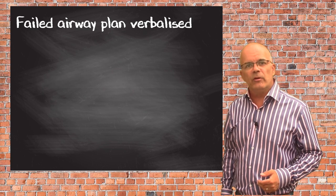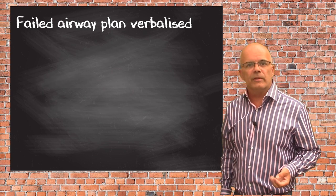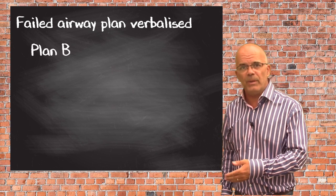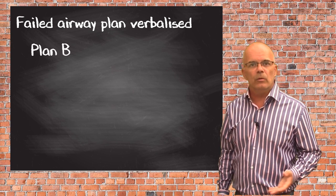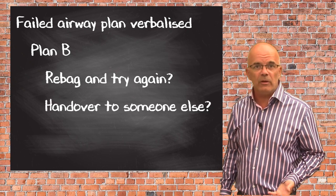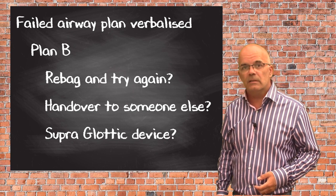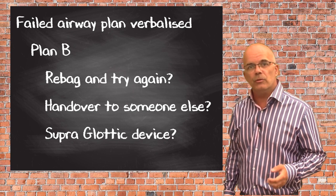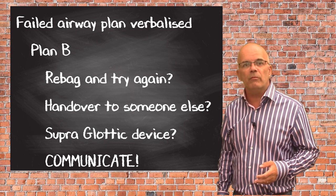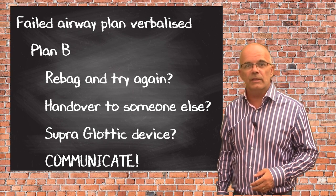Part of the intubation algorithm should include what you are going to do if you cannot intubate the patient. Plan B: will you come out, re-bag and try again? Will you hand over to someone more experienced? Will you try to use a supraglottic device? Whatever you choose to do, you should communicate this to the rest of the team so that they can be ready for it. Surprises are not good for anyone in this situation.